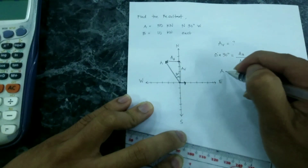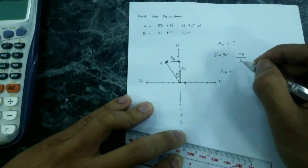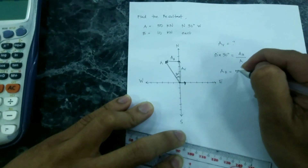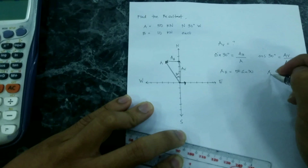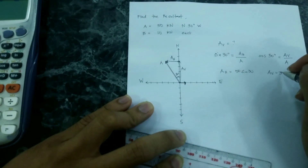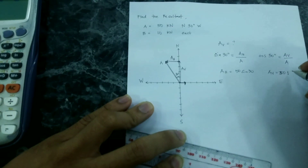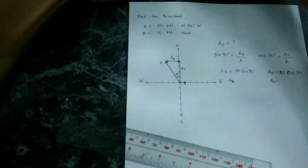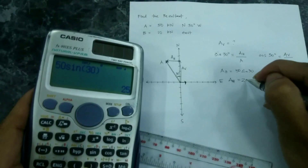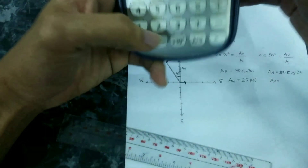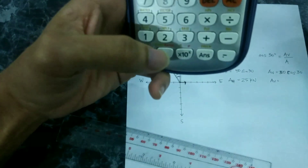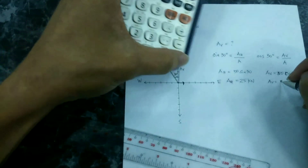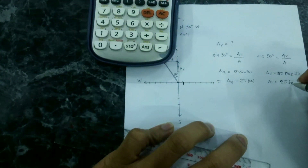The horizontal component of A is equal to A multiplied by sine of 30. Your A is 50 kN, so A_H = 50 sine 30 = 25 kN. The vertical component A_V = 50 cosine 30 = 25√3 kN.